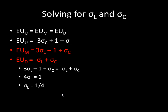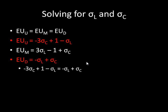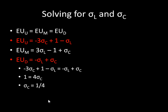Now we just need to solve for sigma-center. Looking at EU(up) and EU(down), those two things are equal to each other. Setting them equal, the negative sigma-left terms on both sides drop out, and we're left with one equals four times sigma-center, so sigma-center equals one-fourth. That means player two will be playing center, or paper, with probability one-fourth. And she'll play right, or scissors, with the remaining probability: one minus one-fourth minus one-fourth equals one-half.